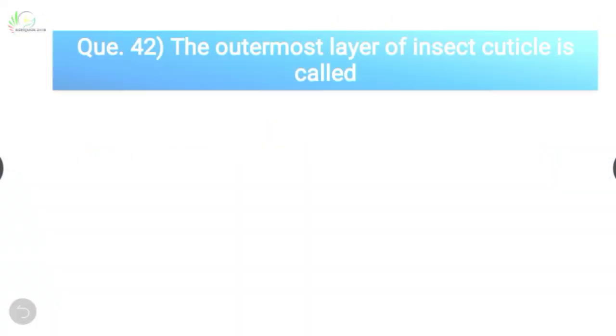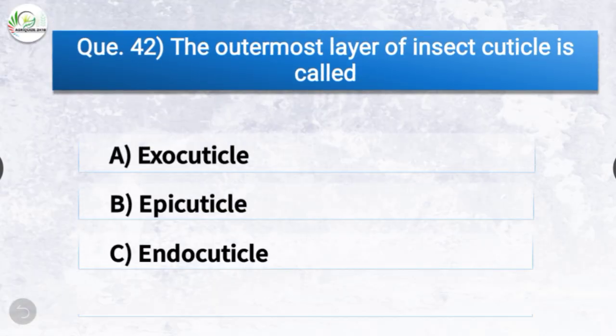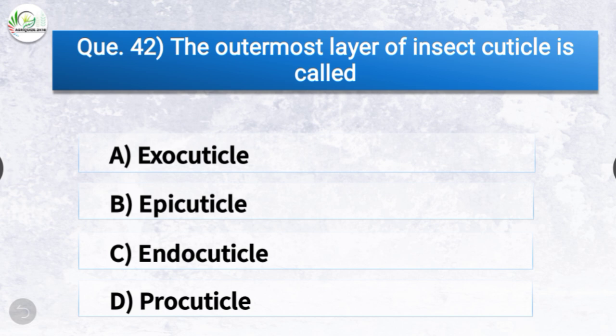Question number forty-two: The outermost layer of insect cuticle is called? The options are exocuticle, epicuticle, endocuticle, or procuticle. The correct answer is option B, epicuticle — the outermost layer of insect cuticle is called epicuticle.